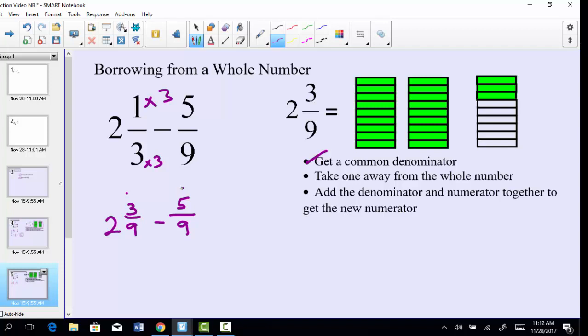So what we can do, and this is the nice part, is we can borrow from our whole. Borrow from our 2 and make it a 1. And what we can say is it's really 1 and 9/9, because 1 and 9/9 is totally equivalent to 2.